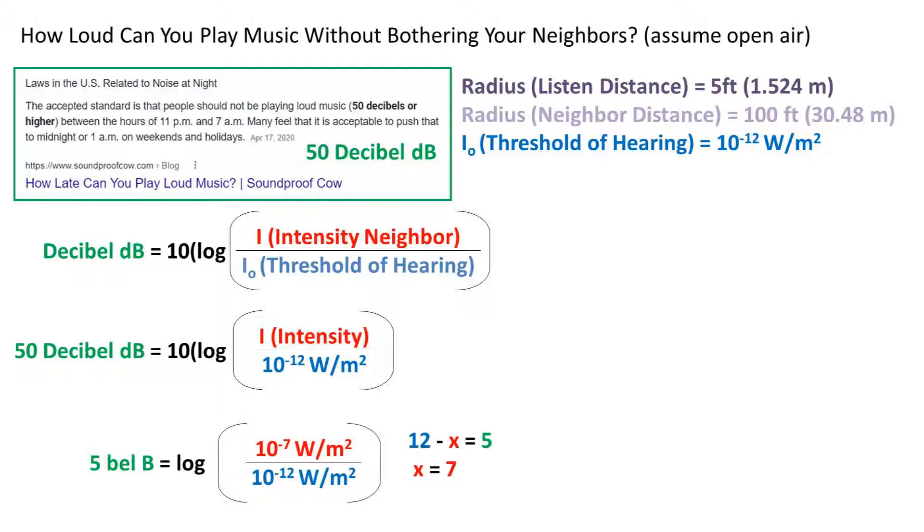Solving this equation, we get that the intensity at the neighbor's location or numerator must be 10 to the negative 7 watts per meter squared.